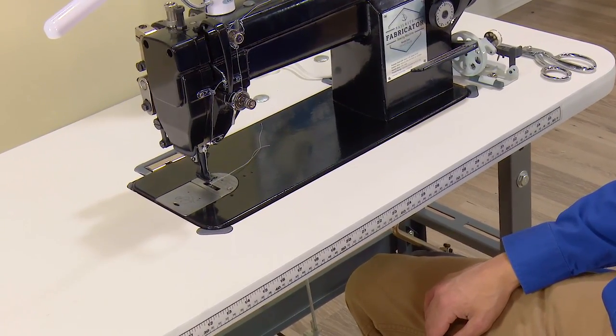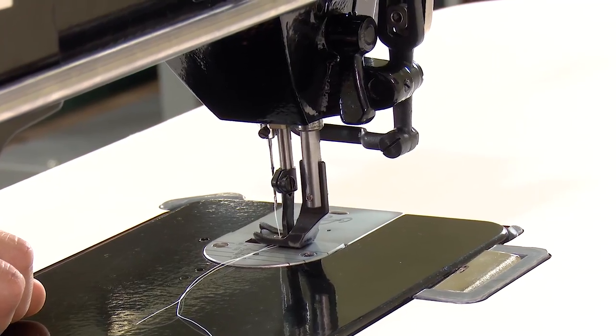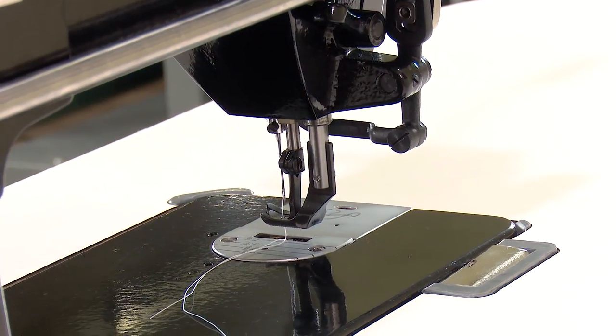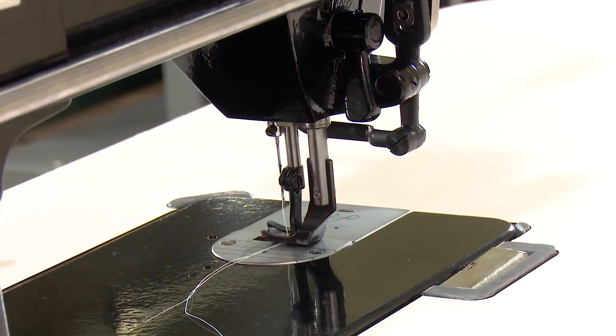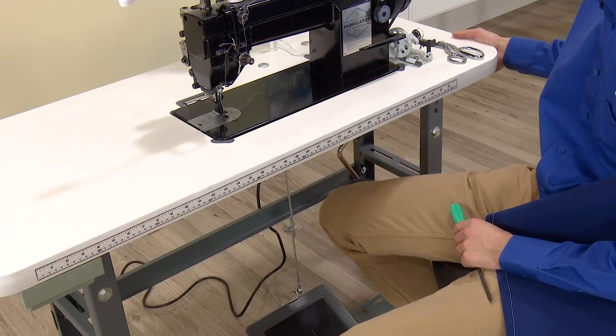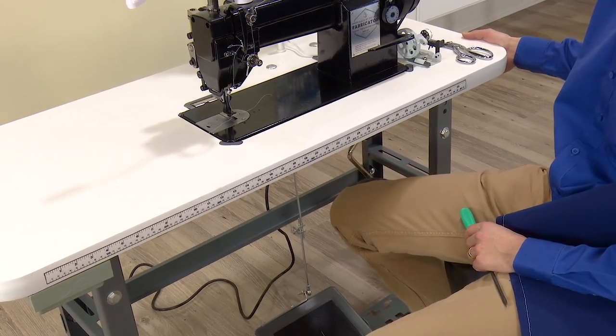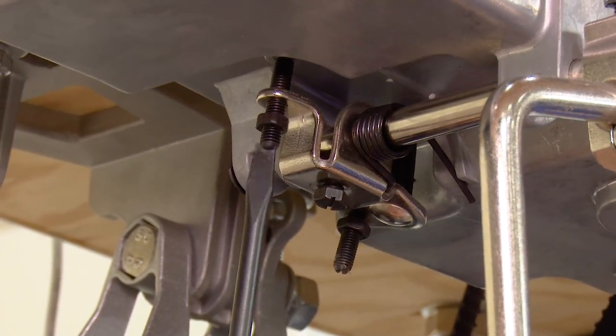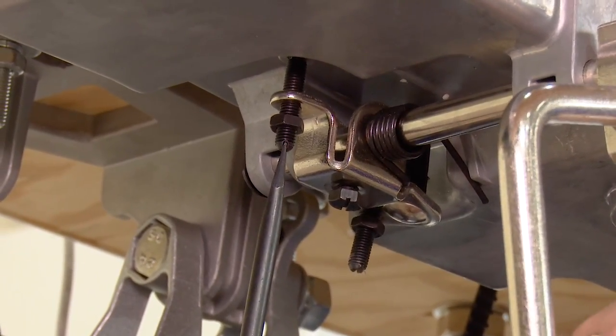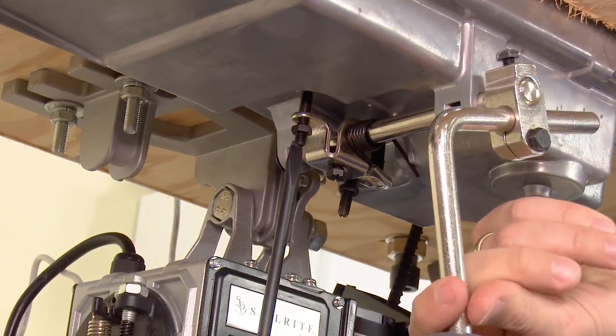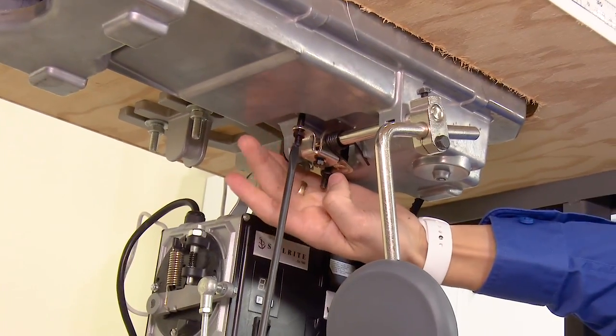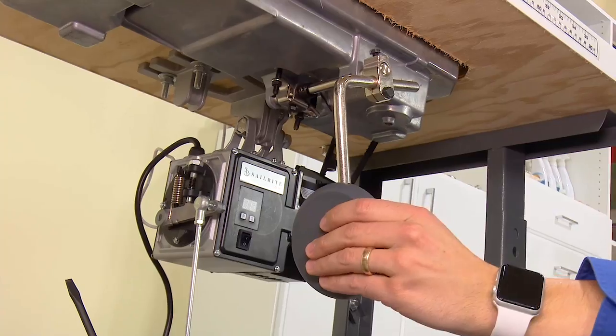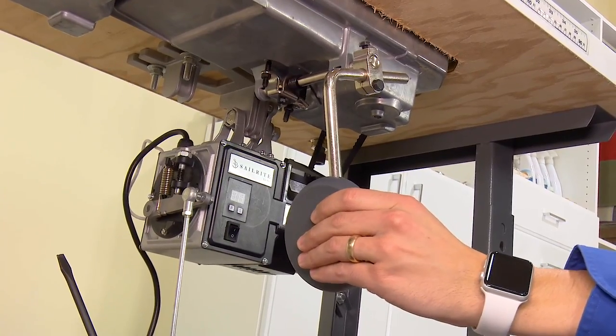The Sailrite fabricator has a knee lifter which makes it possible to lift the presser foot hands free. However, it also features a hand lever in the rear of the machine that does the same. You will love using the knee lever and it will quickly become the standard for lifting your presser foot. For optimal performance we suggest adjusting all slop out of the knee lever. To remove undesired slack in the knee lift lever, adjust the left set screw closest to the needle. Loosen the nut and push the knee lever until just before it engages the foot. Then tighten the set screw until it touches the oil tray. After that, tighten the nut to hold its location.